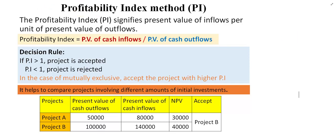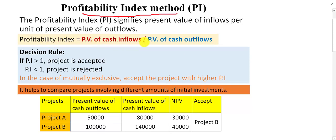Bismillahirrahmanirrahim. The next method of capital budgeting is the Profitability Index method. This technique is also used to evaluate the profitability of a project and to decide whether the project should be accepted or rejected. A simple definition: the Profitability Index, or PI, signifies the present value of inflow per unit of present value of outflow. Mathematically, PI = present value of inflow divided by present value of outflow. This finds out the profitability of the project in terms of its cost.